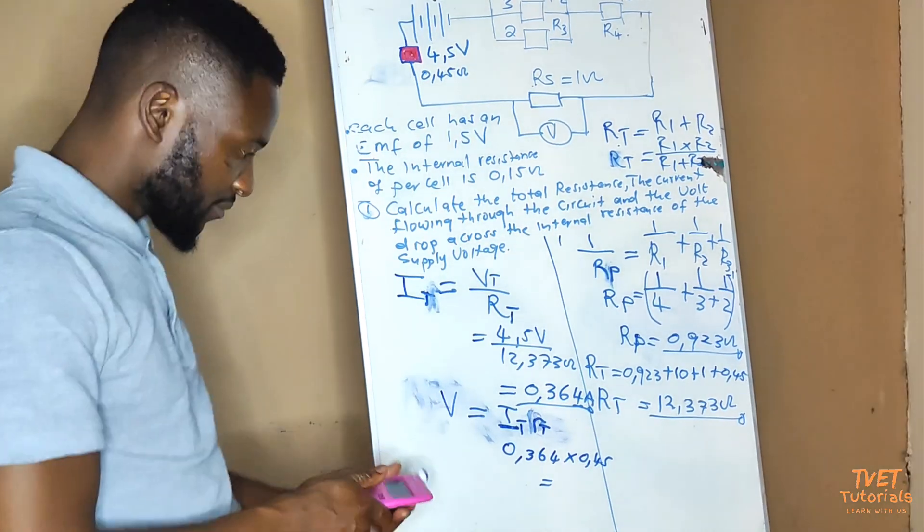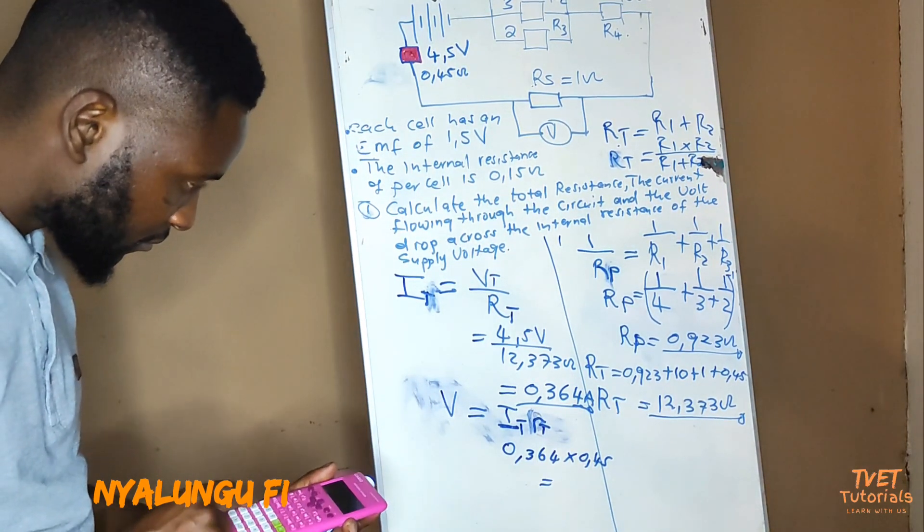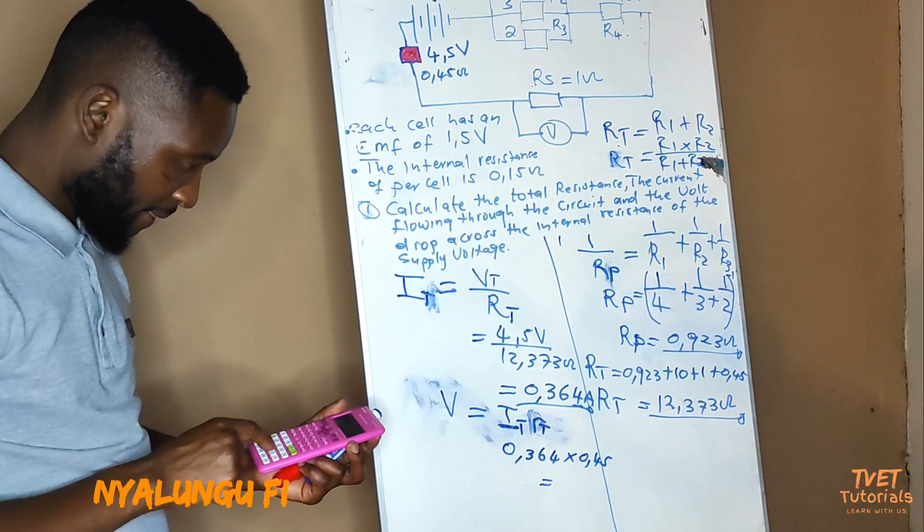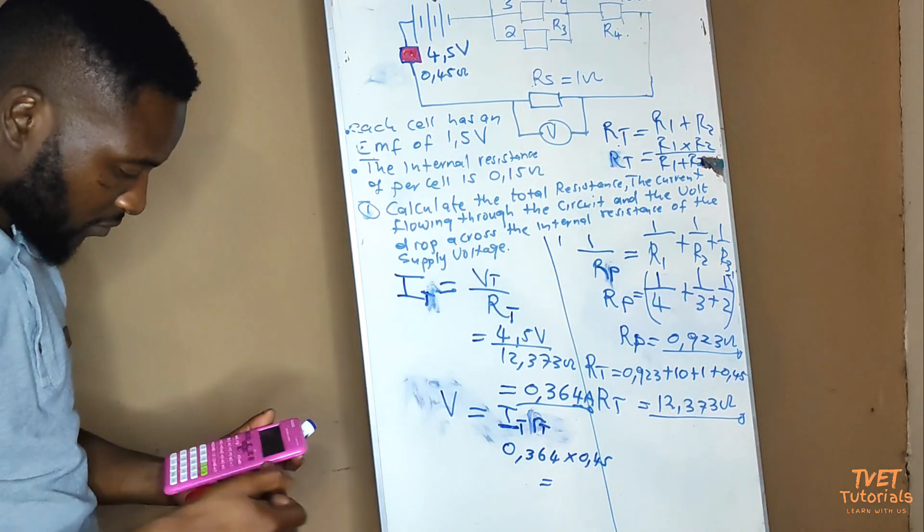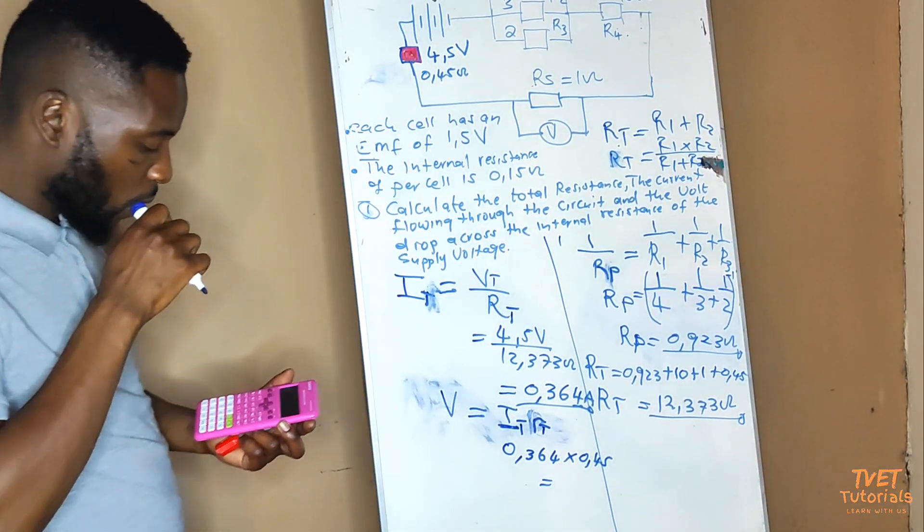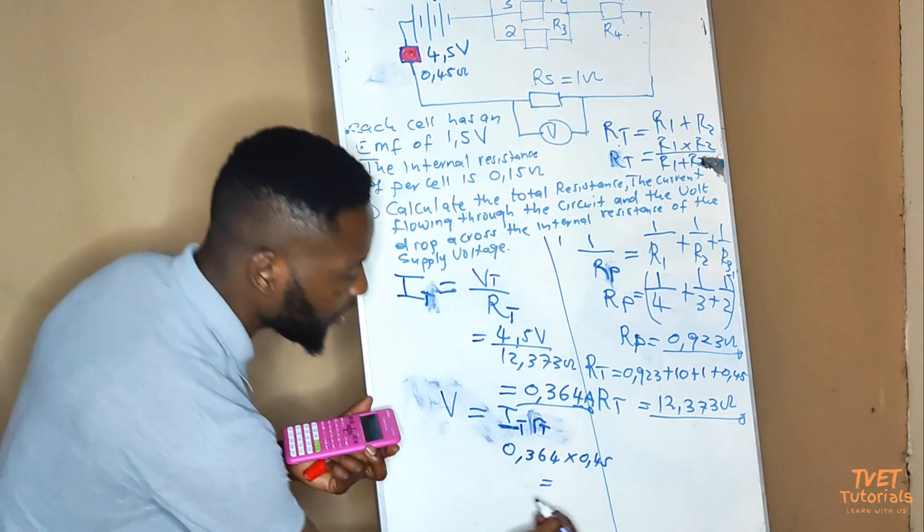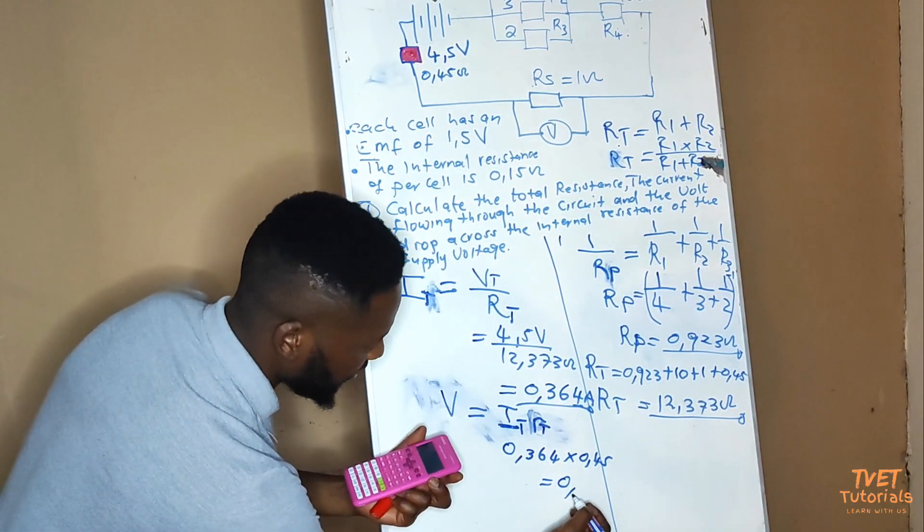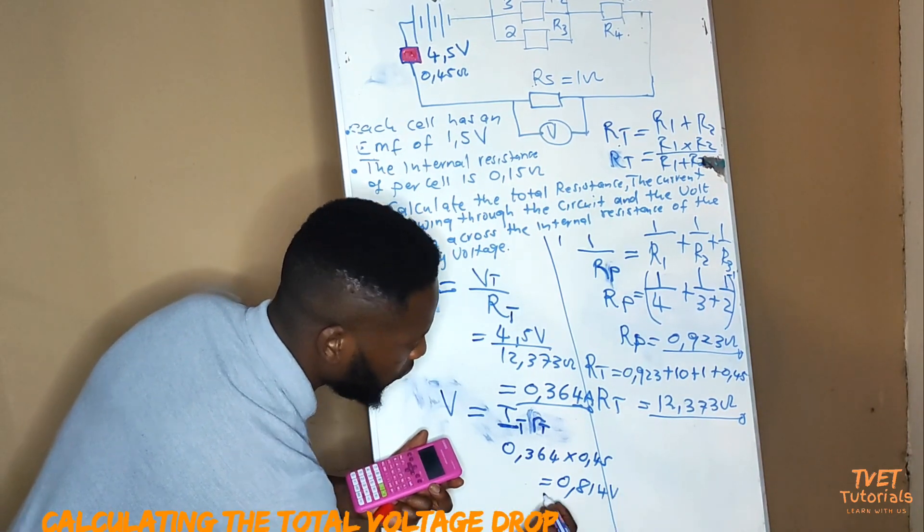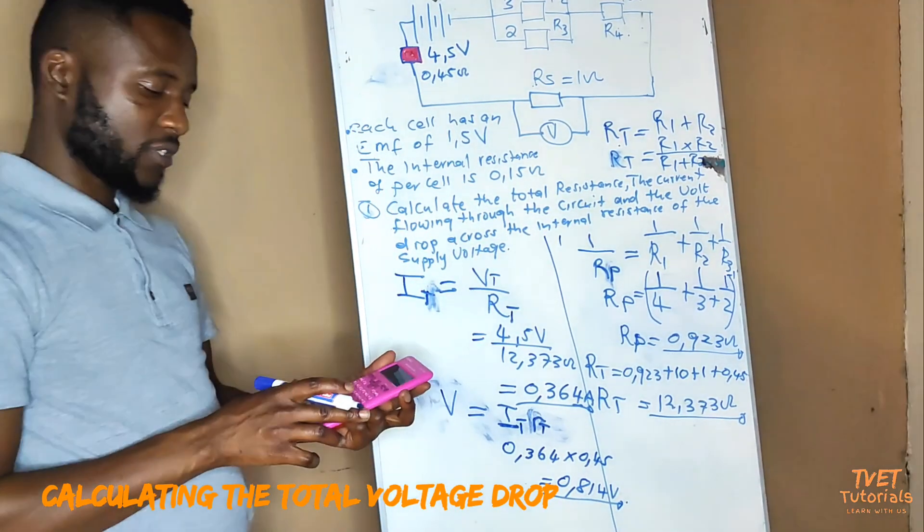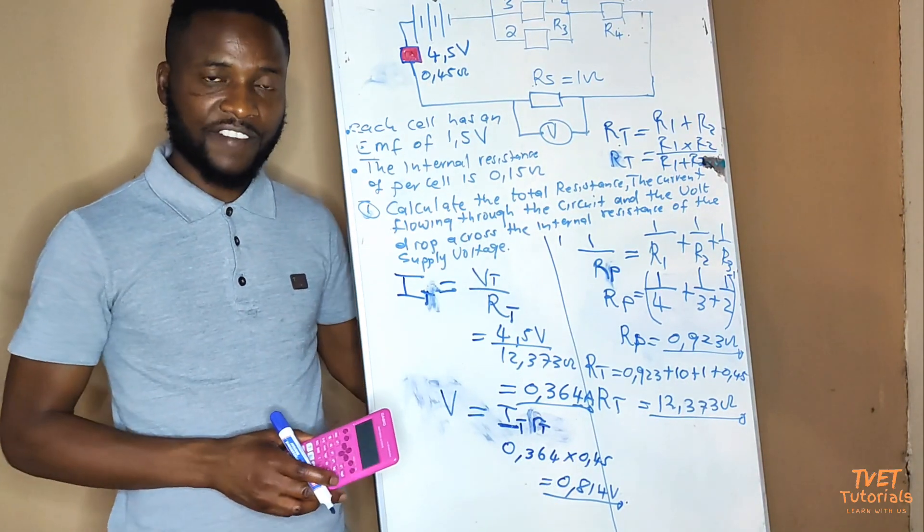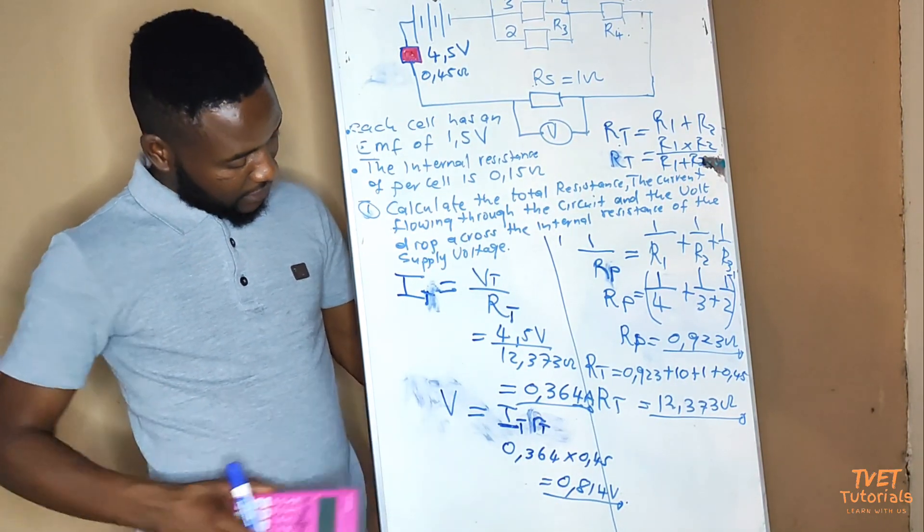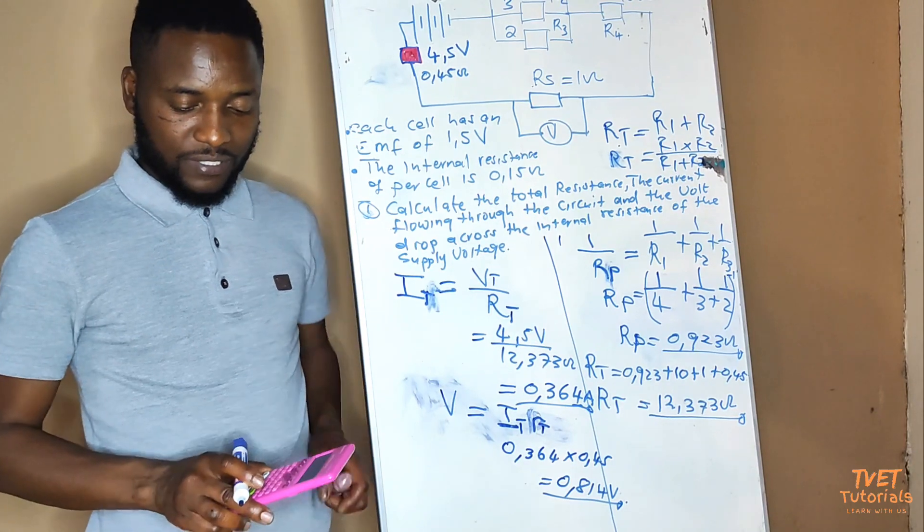So let's see the magnitude. The magnitude of the voltage drop is 0.814 volts. So this is our final question, and our final answer.